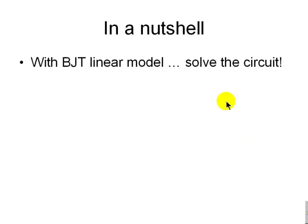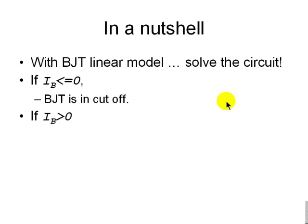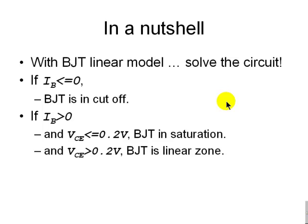In a nutshell: with the BJT linear model, we solve the circuit. If IB is not positive, the BJT is in cutoff mode. If IB is positive, we compute VCE and check whether it is less than or equal to 0.2 volts — in which case the BJT is in saturation. Otherwise, the BJT is operating as an amplifier, in linear mode. And with this, we end the review of the essential facts from the lecture. Now we move on to the actual tutorial.